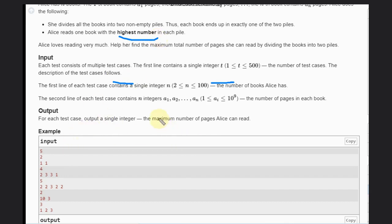So if we say here in the first case, one and one. So what you can do? You can put one here, one here. We can read one book from this pile, one book from this pile. Answer will be two. That is very straightforward.